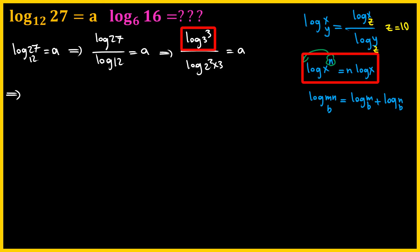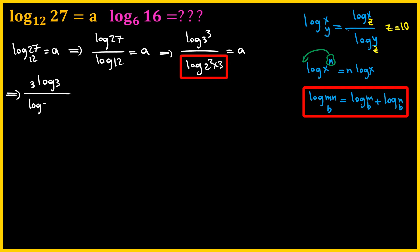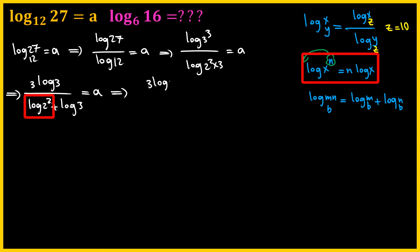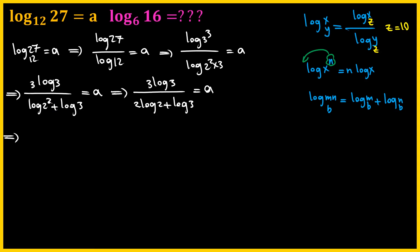And then we use the power property on the top, and we get 3 log 3, and then by using the product property on the bottom, we get log 2 squared plus log 3, which again equals to a. And then by using the power property again, we get 3 log 3 over 2 log 2 plus log 3. And then we're going to cross multiply.